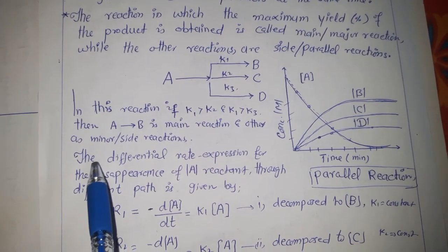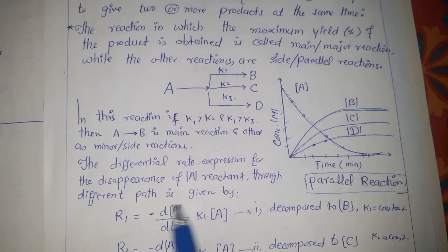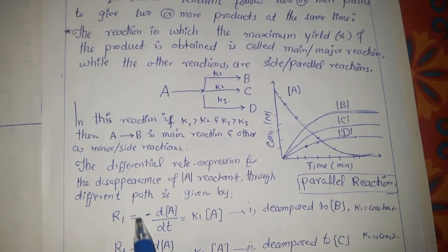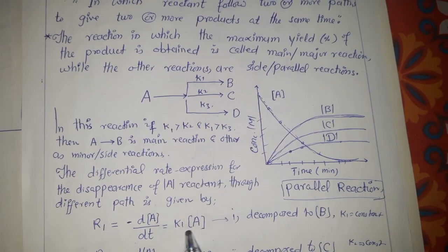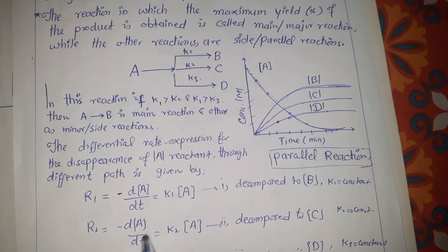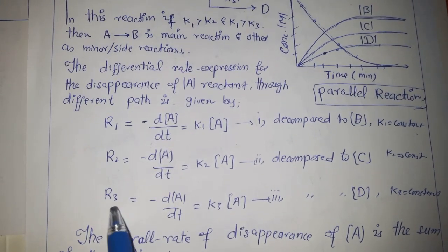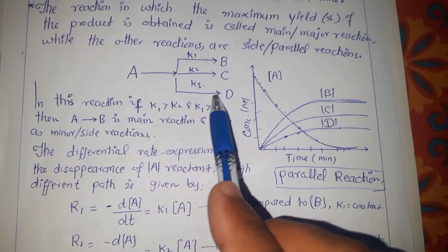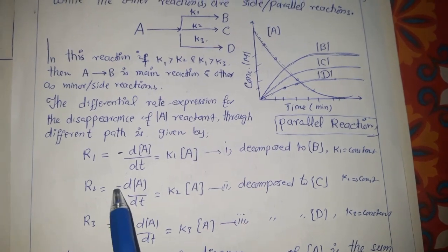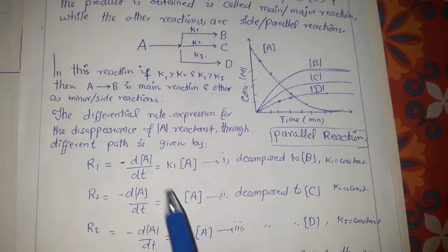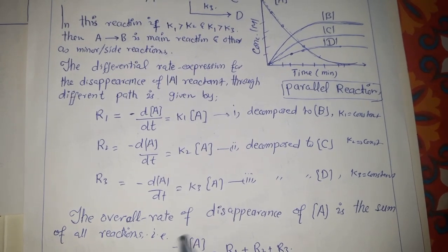Now we have to give the differential rate expression for the disappearance of reactant A through different paths to give different products. Rate 1 represents the disappearance of reactant A into product B, represented as K1·[A]. Similarly, the disappearance of A into product C is represented as K2·[A], and the disappearance of A into product D is represented as K3·[A]. The negative sign in all these rate expressions represents the decrease in concentration of reactant A.